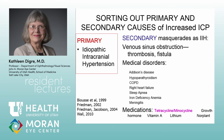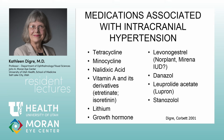Secondary causes that can mimic IIH include venous sinus thrombosis — which can present identically — hypoparathyroidism, right heart failure, iron deficiency anemia (hemoglobin down to about six), and medications: tetracycline, minocycline — very common — growth hormone, vitamin A, lithium, and potentially Norplant, Mirena IUDs, and Lupron. There is a whole list of drugs that can cause raised intracranial pressure.